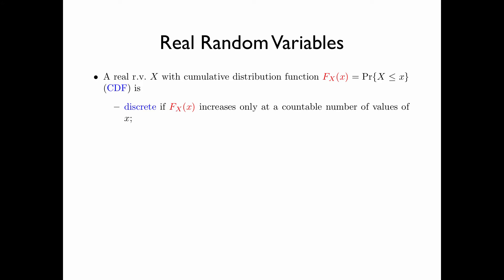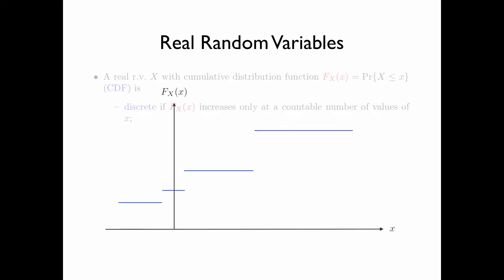The random variable is discrete if F(x) increases only at a countable number of values of x. The value of F(x) stays constant except at a countable number of values. The steps occur at those values of x where there is a probability mass, and the height of the step represents the value of the probability mass.